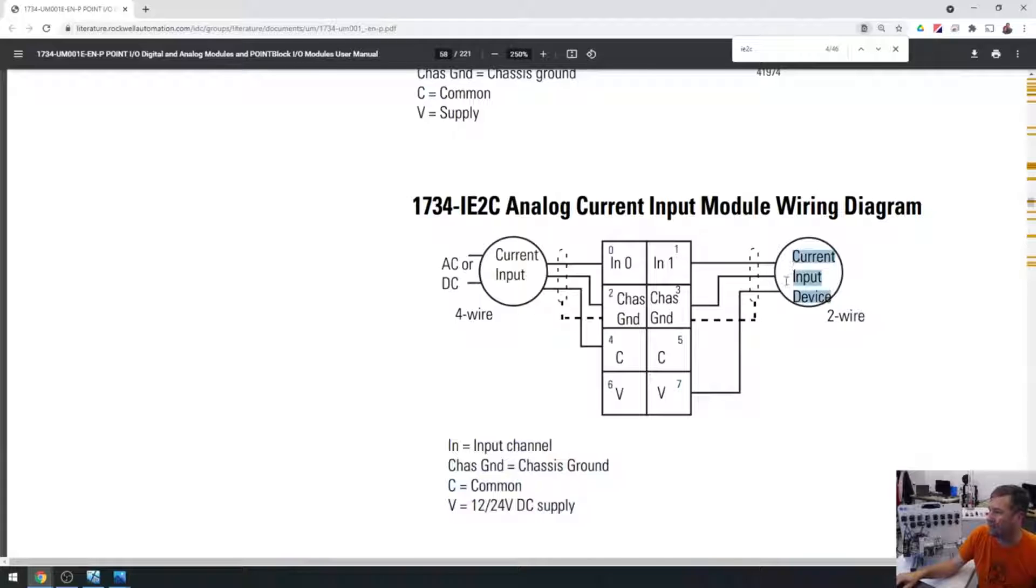You see that we have an input, and we have a chassis ground, and then we have a voltage, or a V terminal, which we can assume is voltage actually right here. V is 12 or 24 volts supply. And then we're going back to the input. But on this side...